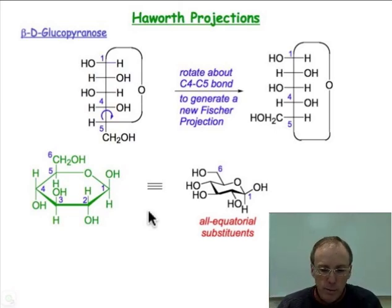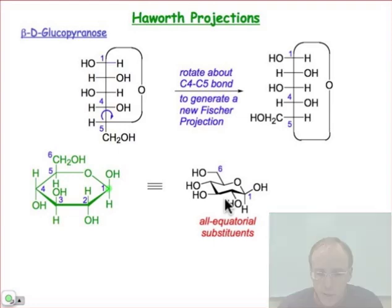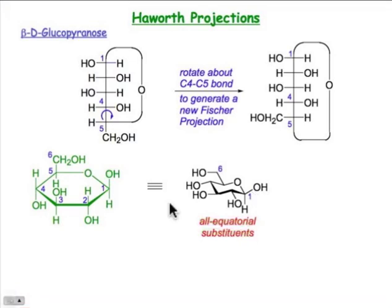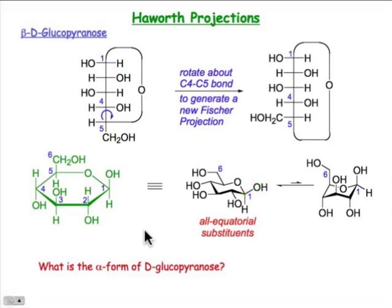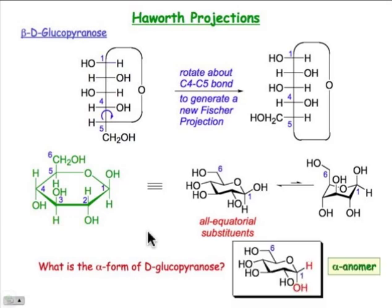We can transform that Haworth projection into a chair form — you should make your own model. This happens to be the beta configuration. The anomeric carbon — the only carbon with two oxygens attached — has its oxygen up in the beta form. In beta-D-glucose, all the substituents are in the equatorial position. We could flip it to put all substituents axial, but that's not a favorable form. For the alpha form, there's just a configuration change at the anomeric carbon: instead of an equatorial bond for carbon 1 to oxygen, it's in the axial position, with everything else remaining fixed. You can remember this as: alpha axial, beta equatorial.